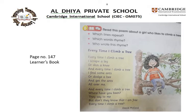Now you are going to read the poem. The title is: Every Time I Climb a Tree. Every time I climb a tree, I scrape a leg or skin a knee. Every time I climb a tree, I find some ants or dodge a bee. And every time I climb a tree, I find some ants or dodge a bee, and get the ants all over me. And every time I climb a tree — where have you been? They say to me. But they don't know that I am free, and every time I climb a tree.